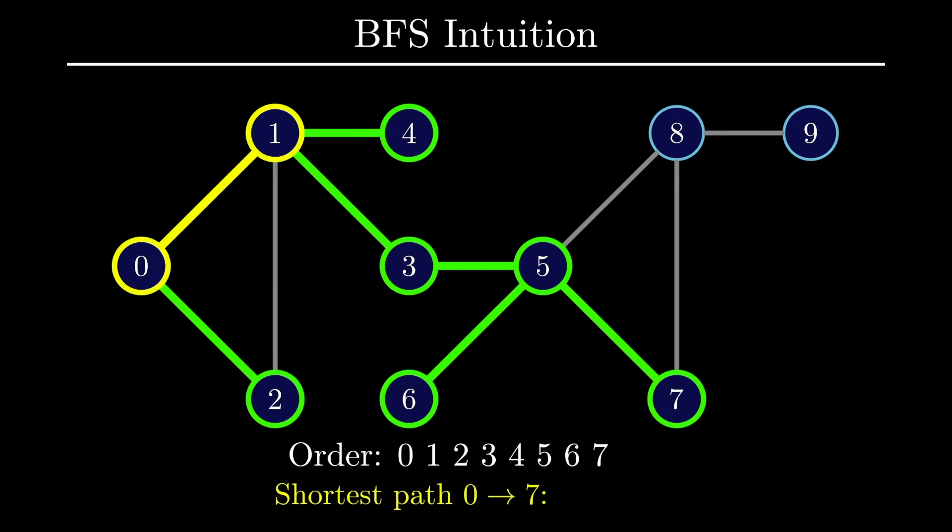For example, the shortest path from vertex 0 to vertex 7 is discovered as soon as we visit vertex 7. As a result of this property for graphs with equal edge weights like this one, algorithms centered around breadth first search are the go-to method for solving shortest path problems.